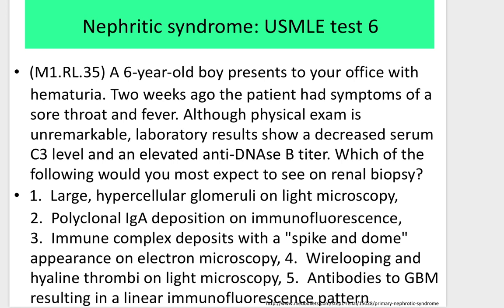Test 6: A 6-year-old boy presents with hematuria. Two weeks ago he had symptoms of sore throat and fever. Physical exam is unremarkable. Laboratory results show a decreased serum complement level and an elevated anti-DNase B titer. Which would you most expect on renal biopsy? (1) Large hypercellular glomeruli on light microscopy, (2) Polyclonal immunoglobulin A deposition on immunofluorescence, (3) Immune complex deposits with spike-and-dome appearance on electron microscopy, (4) Wire looping and hyaline thrombi on light microscopy, (5) Antibodies to glomerular membranes resulting in a linear immunofluorescence pattern.